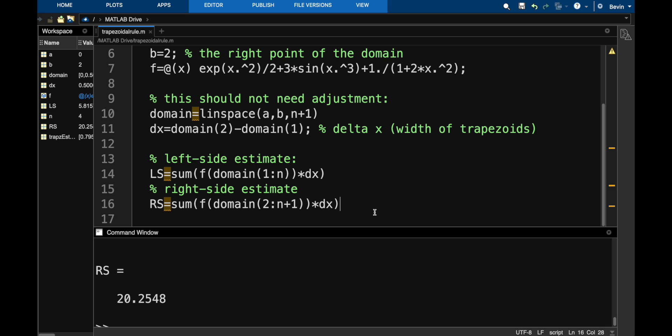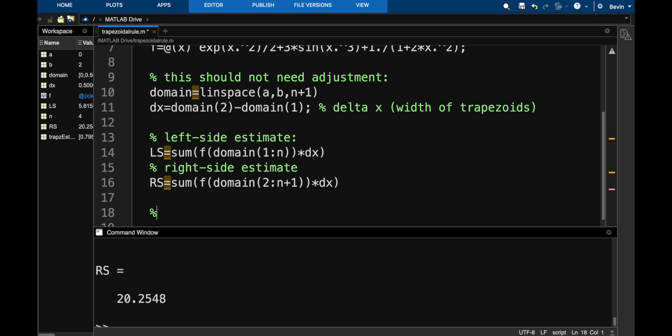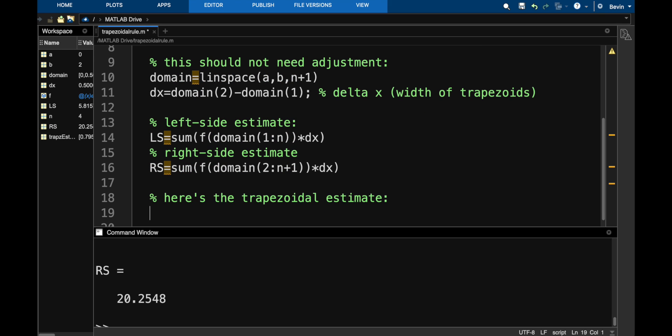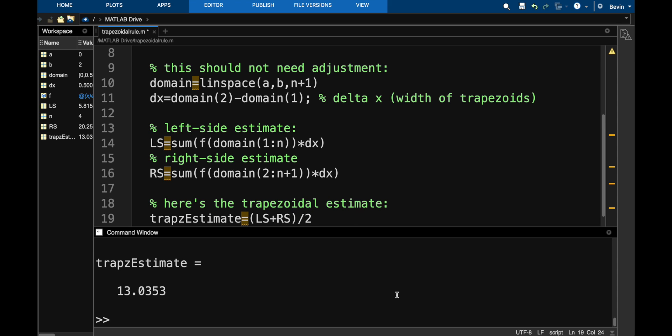To get the trapezoidal estimate, what we will do is average them. There's actually a command in MATLAB called traps. So let me call this traps estimate. That's going to be our name for this. It's ls plus rs divided by 2. So if we run that, we can see that the trapezoidal estimate for this function on this domain with this number of subintervals is about 13.